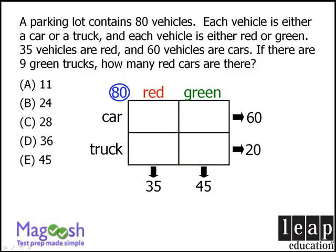At this point we cannot say how many vehicles go in each individual box — we only know the row and column sums. To fill each box, we now need a seed value, and here it is: we are told that we have 9 green trucks. So we place 9 in the green trucks box. From here we can complete the table. Since the green column must sum to 45, the green cars box must be 36. Since the trucks row must sum to 20, the red trucks box must be 11. And since the cars row must sum to 60, the red cars box must be 24.